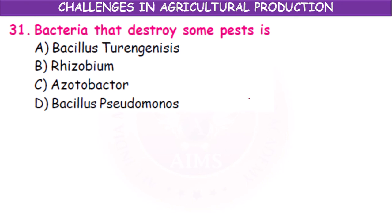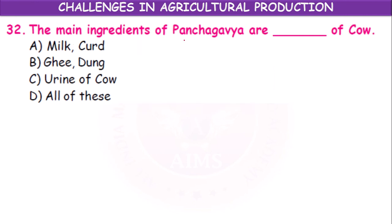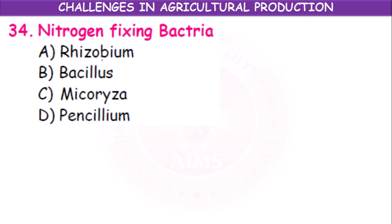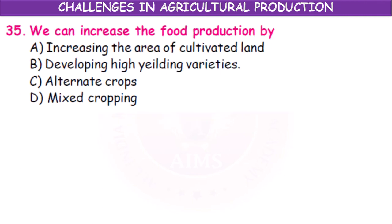Bacillus thuringiensis destroys some pests. The main ingredients of panchagavya are milk, curd, ghee, dung of cow, and urine of cow — all five products obtained from the cow. Nutrients are added to the soil by rotating crops, organic manure, and chemical fertilizers — all of these. The nitrogen-fixing bacterium is Rhizobium. We can increase food production by increasing the area of cultivated land, developing high-yielding varieties, alternate crops, and mixed cropping — it is a multi-correct answer.